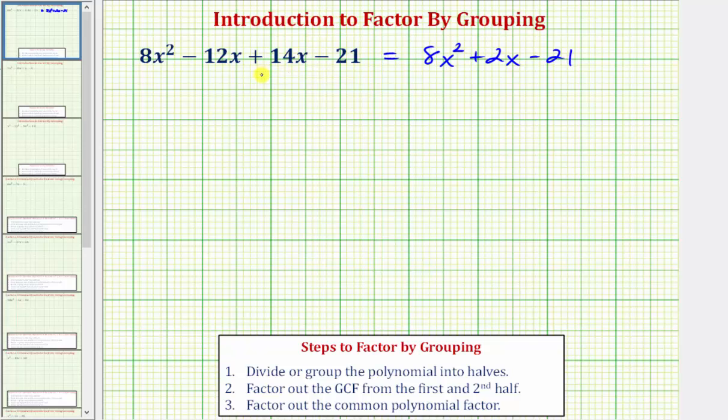One of the main reasons we learn factor by grouping is to be able to factor quadratics in this form where the leading coefficient is not one and these do tend to be more challenging to factor.